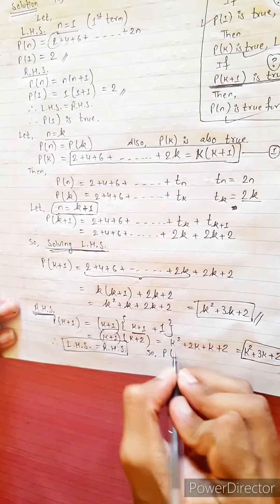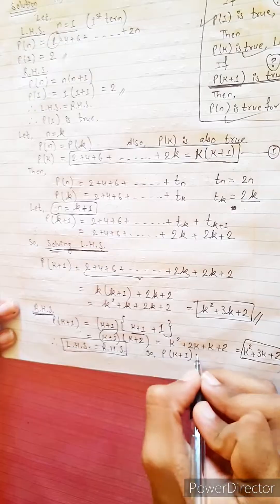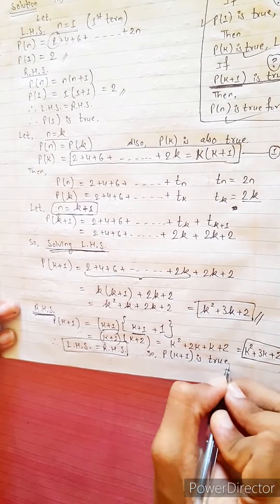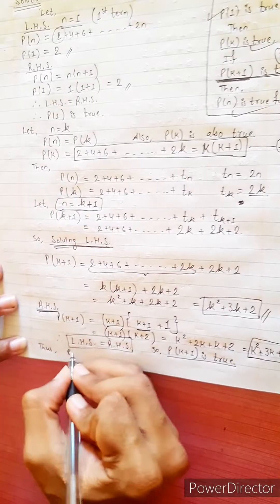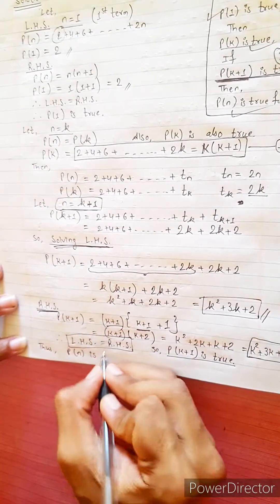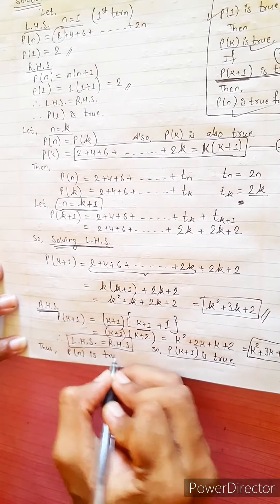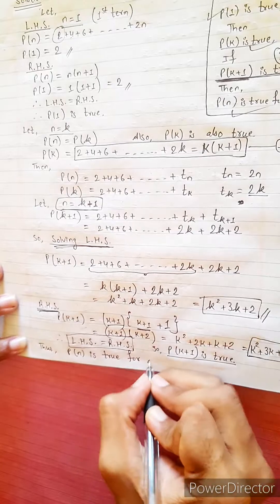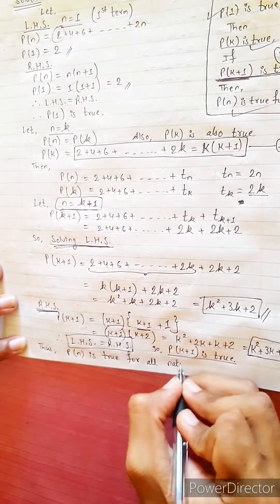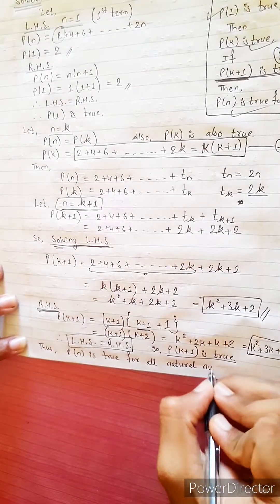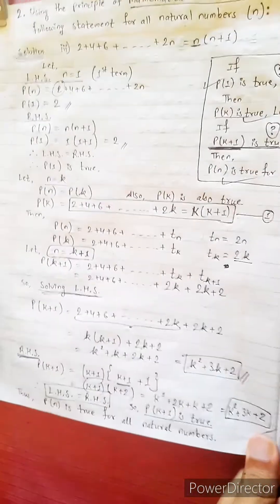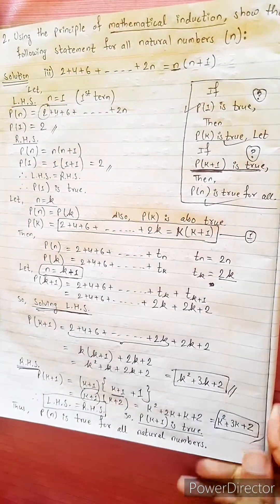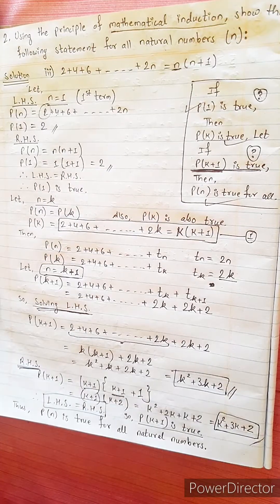So Pk is true implies Pk plus 1 is true. Therefore, Pn is true for all natural numbers.